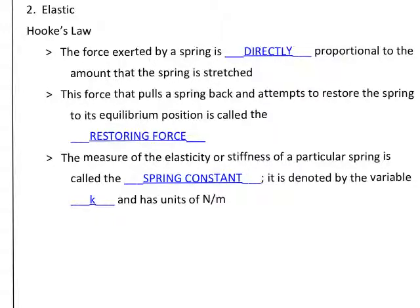The next type of potential energy we'll talk about in detail is elastic potential energy. Elastic substances are things you can do work against — any time you do work against something that can stretch or compress, you've given it elastic potential energy. Before we get into that, we need to look at Hooke's Law, which states that the force exerted by a spring is directly proportional to the amount it is stretched. The force that pulls the spring back to its original or equilibrium position is called the restoring force.